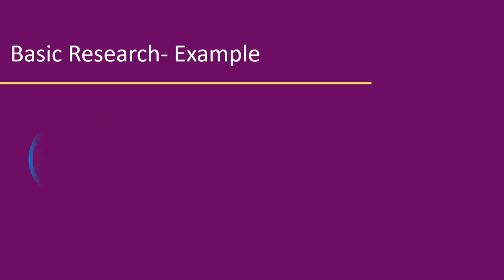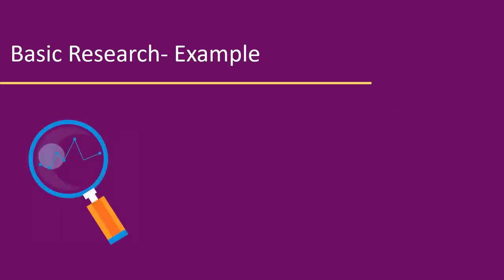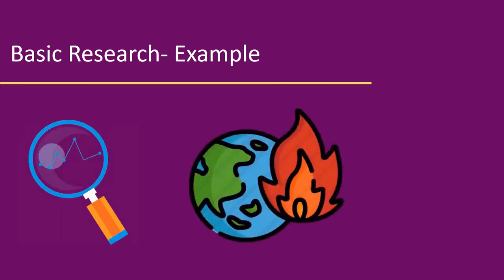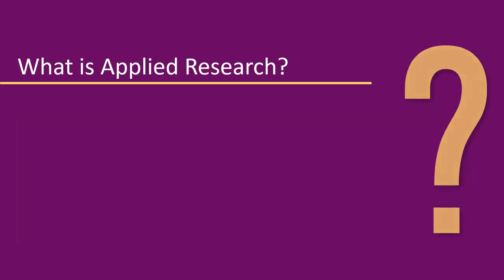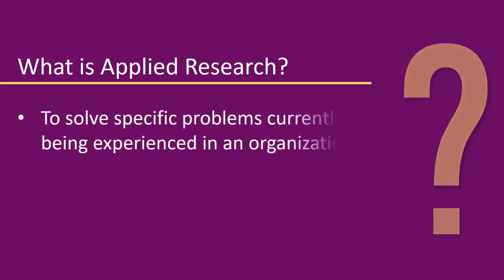For example, research into the causes and consequences of global warming will offer many solutions to minimize the phenomenon and lead to further research to determine if and how global warming can be averted. Research done with the intention of applying the results of the findings to solve a specific problem currently being experienced in an organization is called Applied Research.